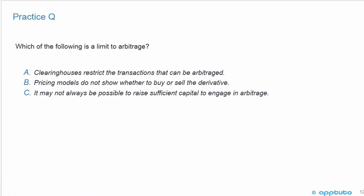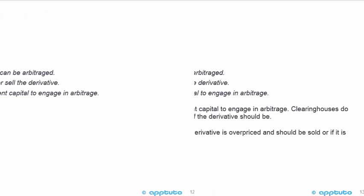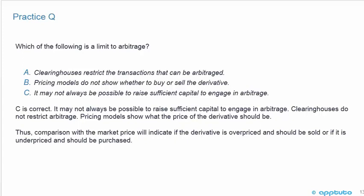To finish this LOS, one last practice question: which of the following is a limit to arbitrage? A, clearing houses restrict the transactions that can be arbitraged; B, pricing models do not show whether to buy or sell the derivative; or C, it may not always be possible to raise sufficient capital to engage in arbitrage. The correct answer is C. Clearing houses do not restrict arbitrage. Pricing models show what the price of the derivative should be — comparison with the market price will indicate if the derivative is overpriced and should be sold, or underpriced and should be purchased. But C is correct: it may not always be possible to raise sufficient capital.